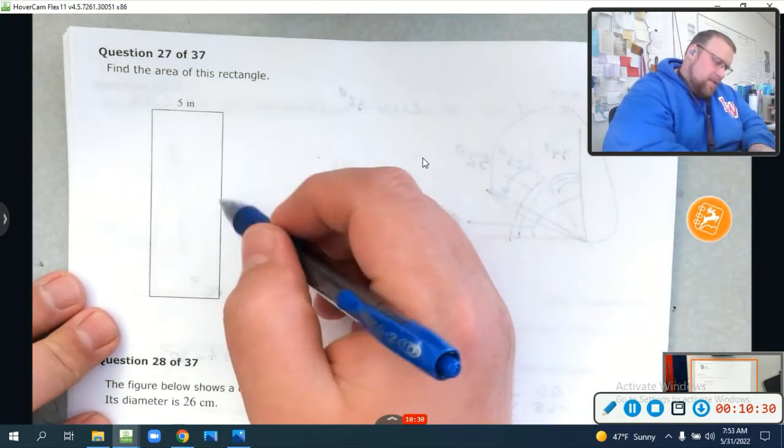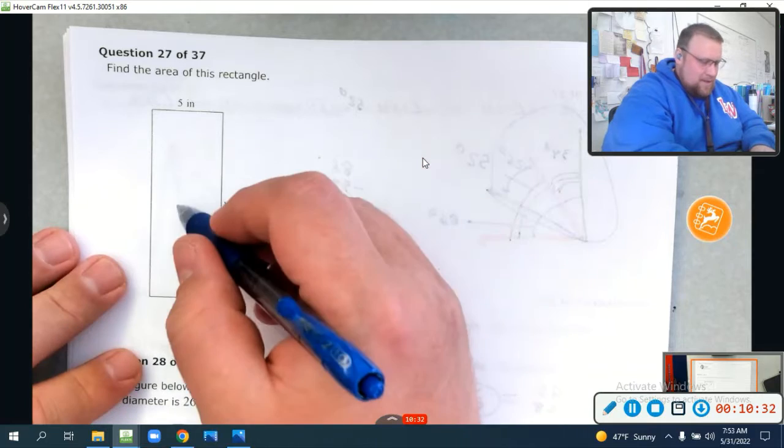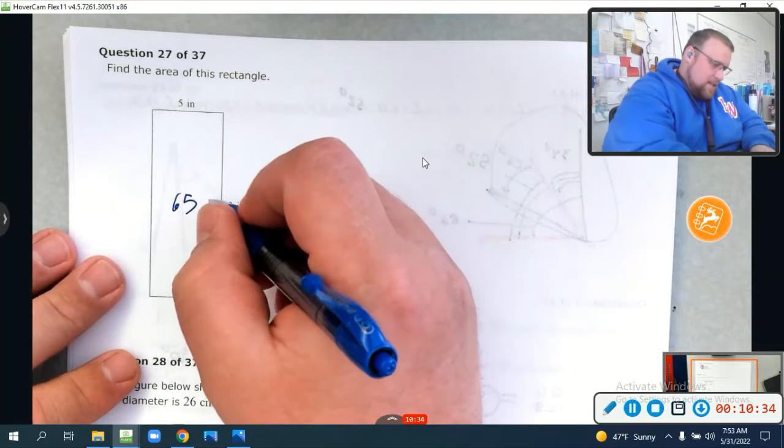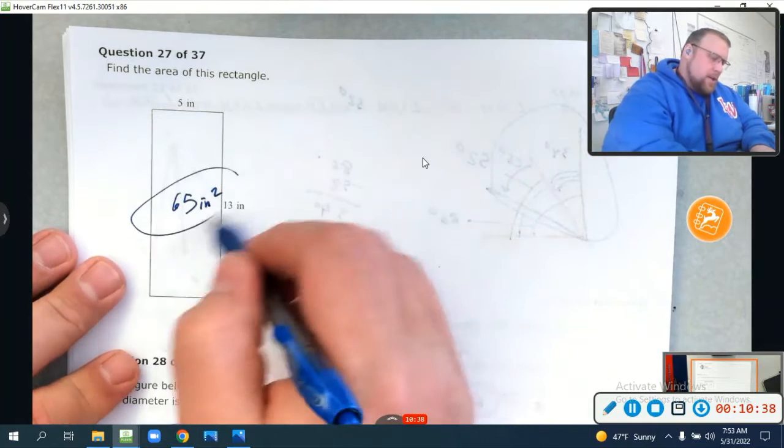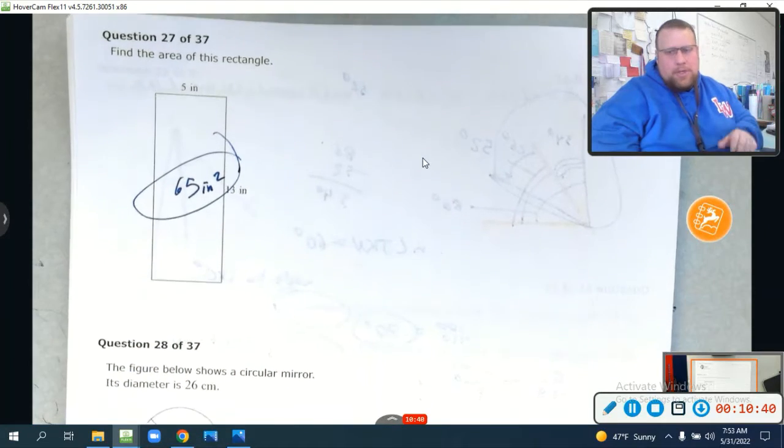Find the area of this rectangle. 5 times 13 is 65. 65 what, though? Inches squared. Make sure you get those units on there. They give you that option. I don't want you to miss it. That will lose points.